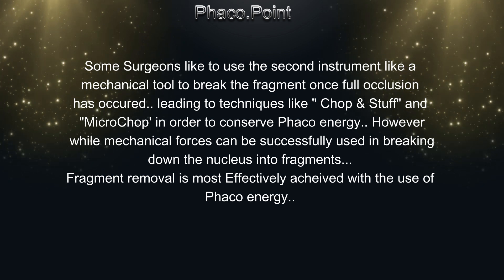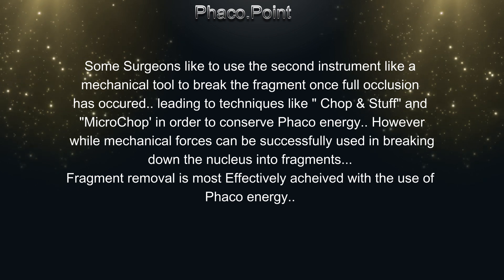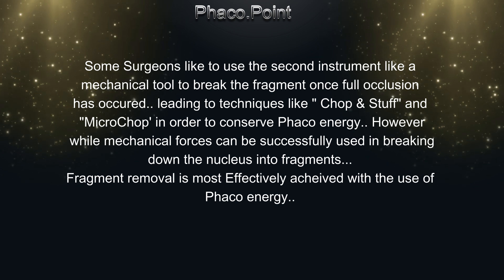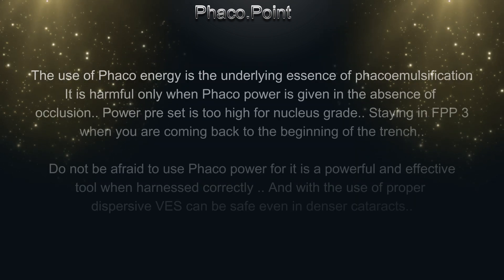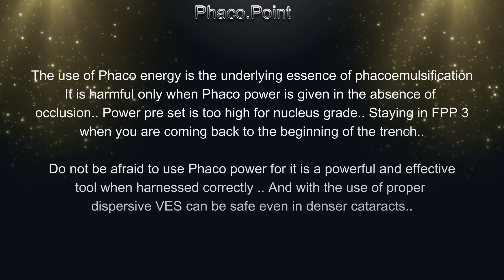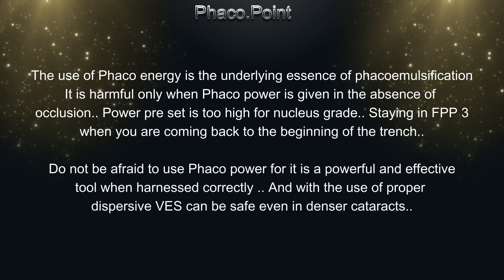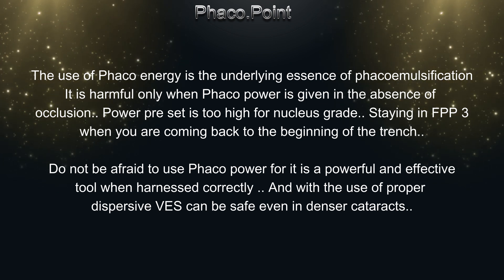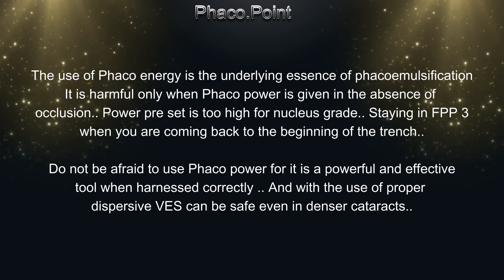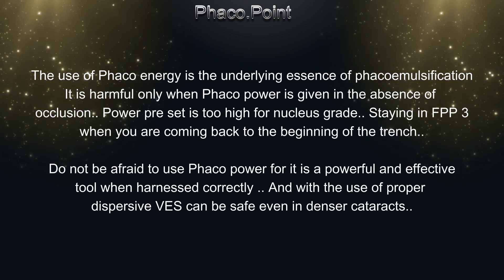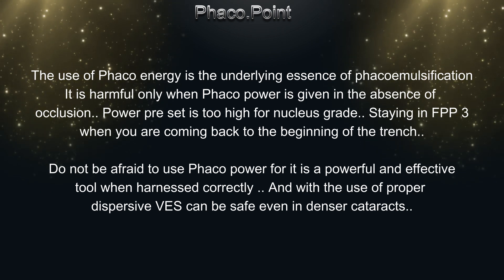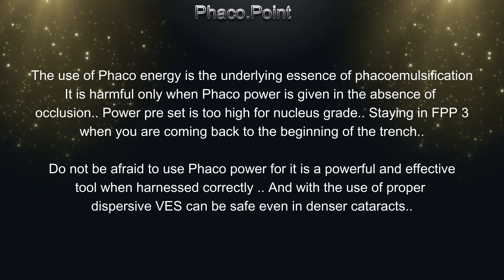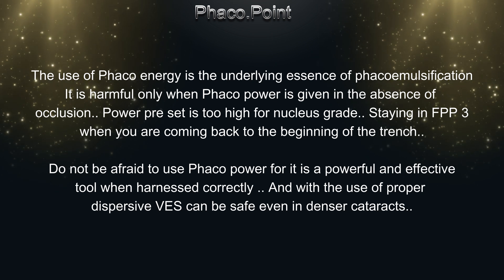However, while mechanical forces can be successfully used in breaking down the nucleus into fragments, fragment removal is most effectively achieved with the use of FACO energy. The use of FACO energy is the underlying essence of phacoemulsification. It is harmful only when FACO power is given in the absence of occlusion, when the power preset is too high for a nucleus grade, or when staying in foot pedal position 3 while coming back to the beginning of the trench. Do not be afraid to use FACO power — it is a powerful and effective tool when harnessed correctly, and with the use of proper dispersive viscoelastics, can be safe even in denser grades of cataract.